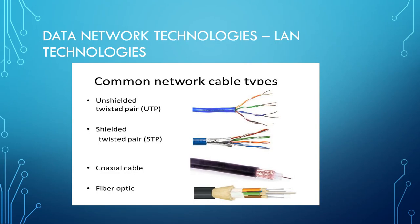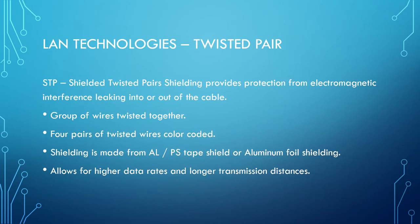Here we will briefly examine cable types used in networks: unshielded twisted pair (UTP), shielded twisted pair (STP), coaxial cable, and fiber optic. STP provides protection from electromagnetic interference leaking into and out of the cable. This cable consists of 4 pairs of color-coded wires wrapped in a thin aluminum foil shielding, which allows for higher data rates and longer transmission distances due to less interference.